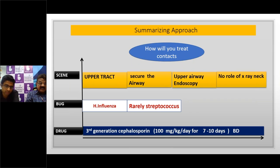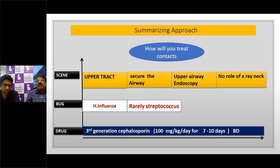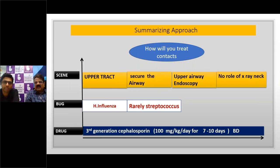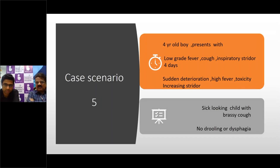The commonest causative organism is H. influenzae; Streptococcus rarely causes this infection. Drug of choice is a third-generation cephalosporin — most commonly ceftriaxone at 100 mg/kg/day for 7-10 days in BD form. Once the child is extubated and taking orally with reduced toxemia, switch to oral cephalosporin; total duration is 10 days. Contacts — especially children below two years who are incompletely or unimmunized — should receive rifampicin 20 mg/kg/day as a single dose for four days. Warn parents about orange-colored urine and sweat as side effects.